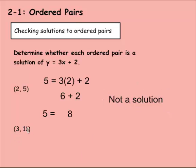Let's look at 3 and 11 then. So we have 11 for y equals 3 times 3 for x plus 2. Well, 3 times 3 is 9. So 9 plus 2, that would give us 11. So does 11 equal 11? It certainly does. So this would be a solution.